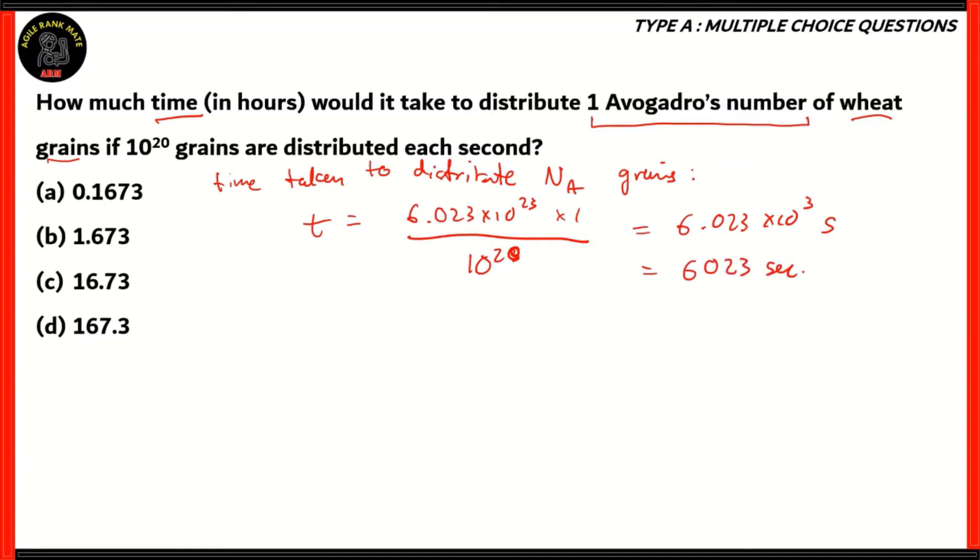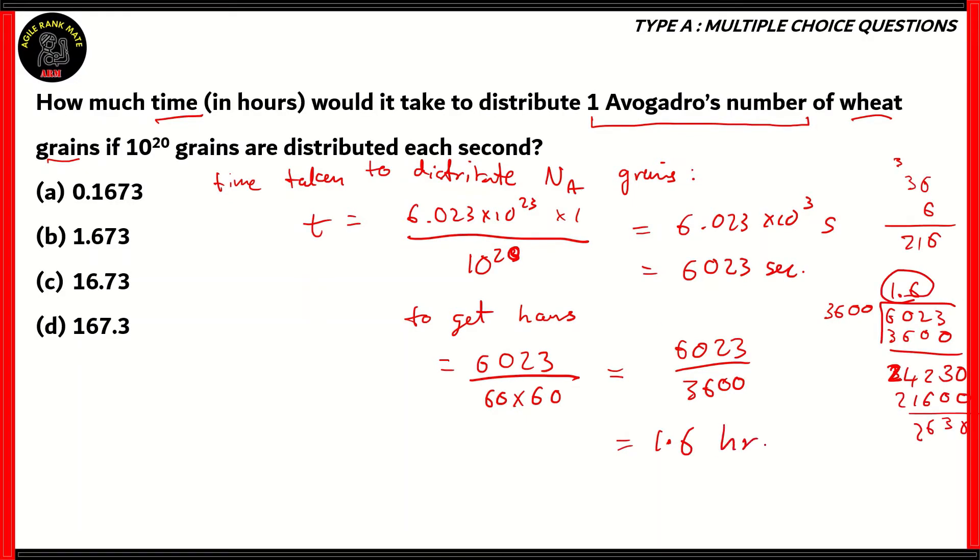The next thing to do is to convert this value into hours. To get hours, we divide the value 6,023 by the multiplication of 60 and 60, which is basically 3,600. That will be 1.6 hours as an approximate. If you look at the following options, you would see that the only option which is closest to it is option B, 1.673 hours.